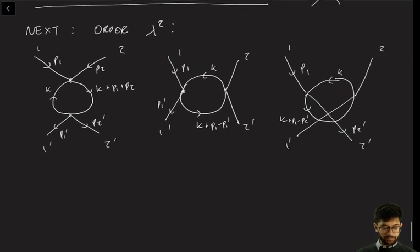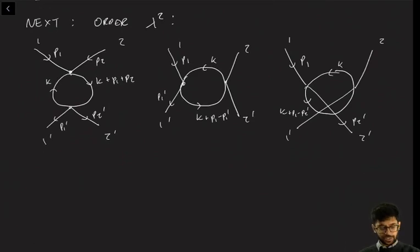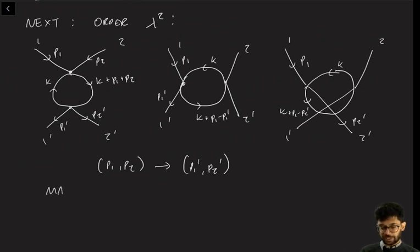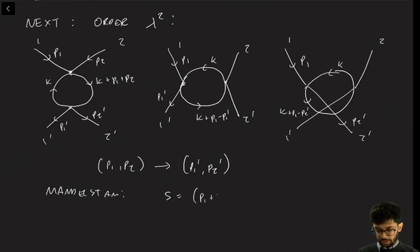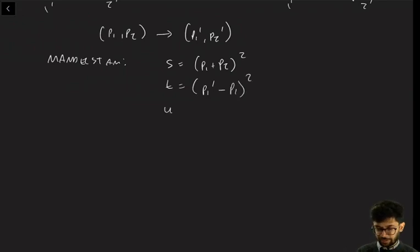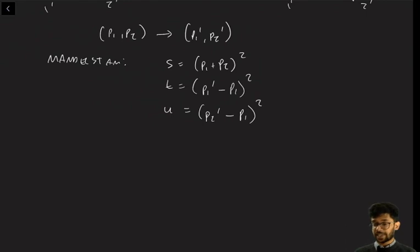Let's remind ourselves of the Mandelstam variables. For two-to-two scattering with momenta P1, P2 going to P1 prime and P2 prime, these variables are defined as follows: S equals (P1 plus P2) squared, T equals (P1 prime minus P1) squared, and U equals (P2 prime minus P1) squared. These are all scalar quantities that capture the Lorentz invariant information in the scattering process.